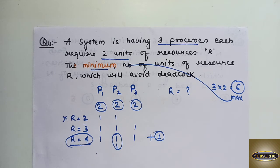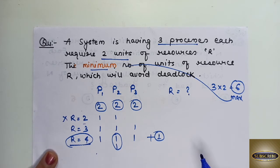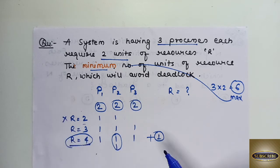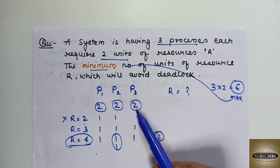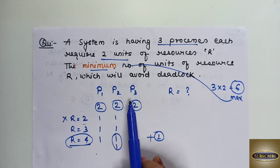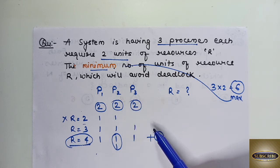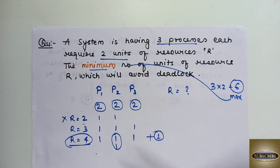Let's derive the formula. The idea is: give each process one less than its maximum demand, then add one extra instance so that at least one process can complete its task and return all its resources, which can then be distributed among the remaining waiting processes. For 3 processes each needing 2 units: give each 1 instance (one less than max demand of 2), that's 3 instances, then add 1 extra — total is 4.